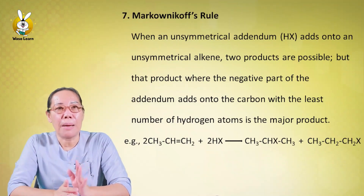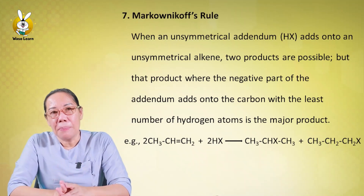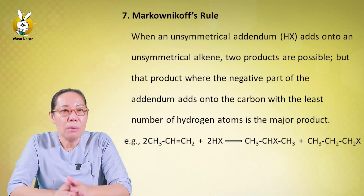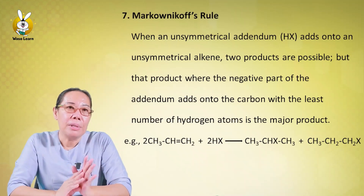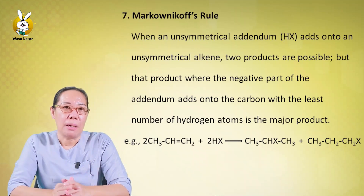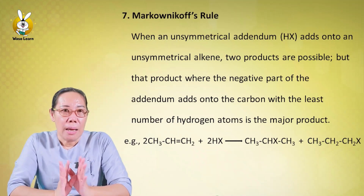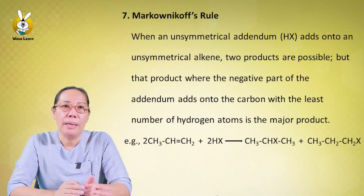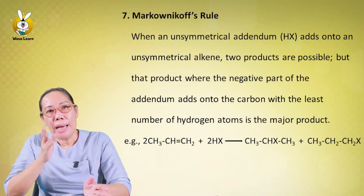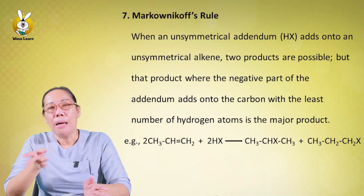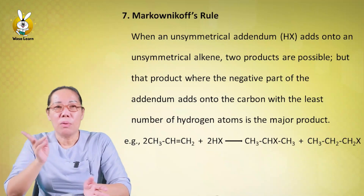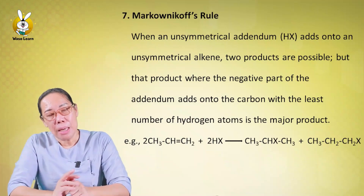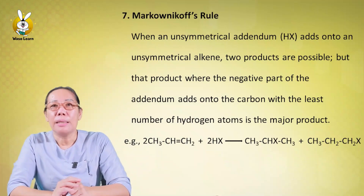In a worked example, hydrogen from HX adds to carbon number 2. HX provides the negative part, X. The hydrogen goes to carbon 2, giving the product CH3–CHX–CH3.